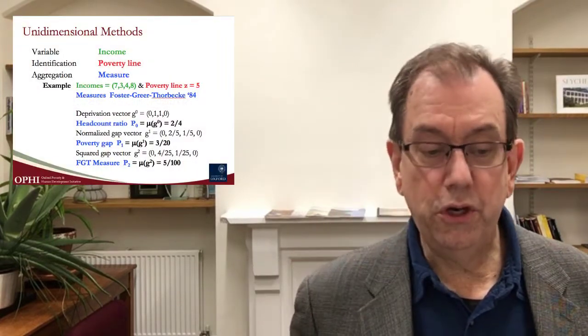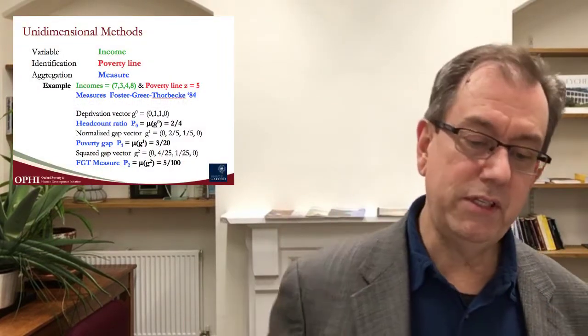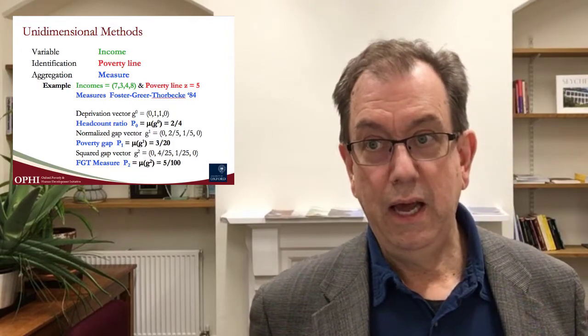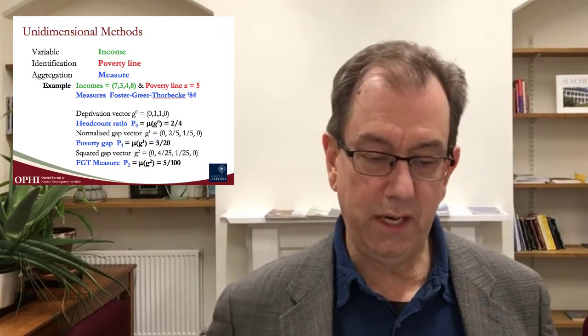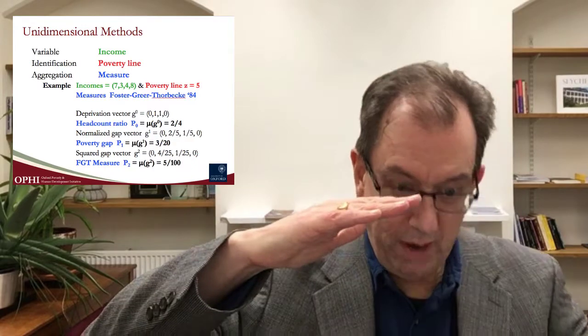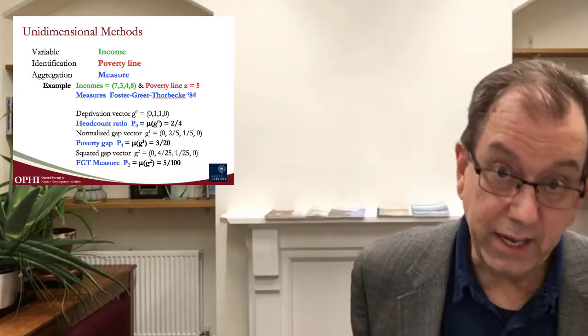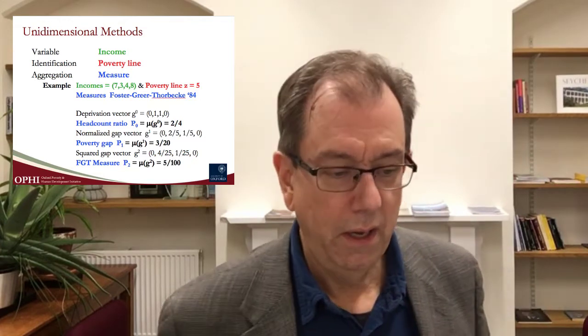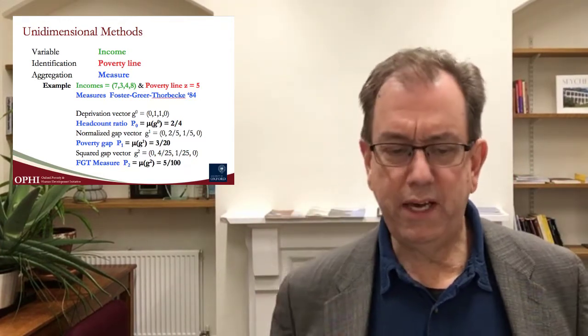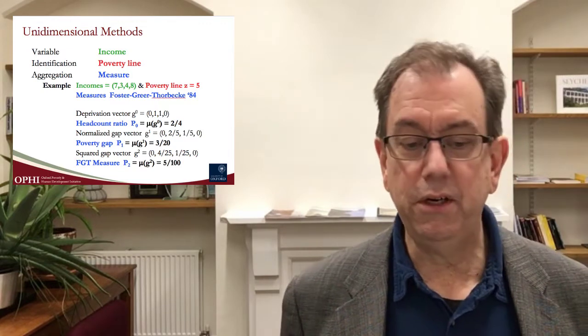We begin with unidimensional technologies, the main one being the Foster-Greer-Thorbeck measure, which has been used in a number of places. The unidimensional approach takes income as its variable, typically, and has a cutoff called the poverty line to determine those below it as being poor. That's the identification part. And then aggregation, where you combine all the data into a measure. Let's have some examples here.